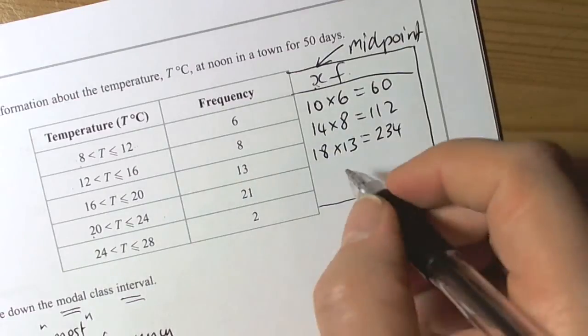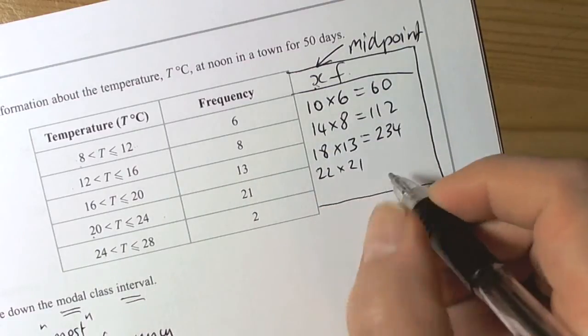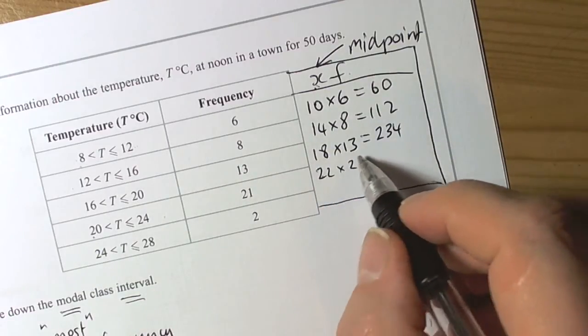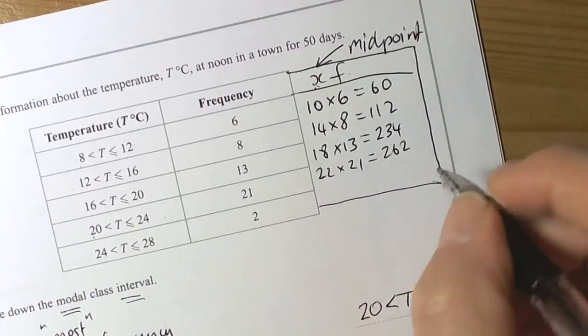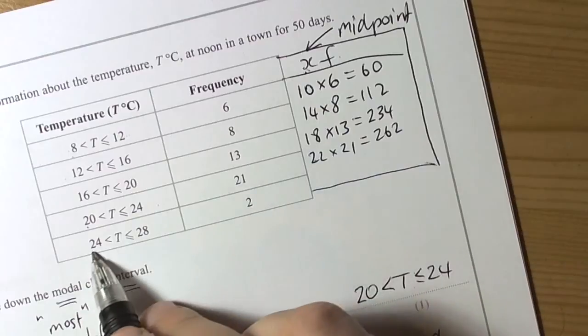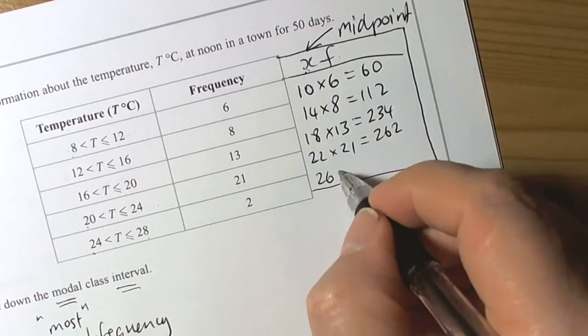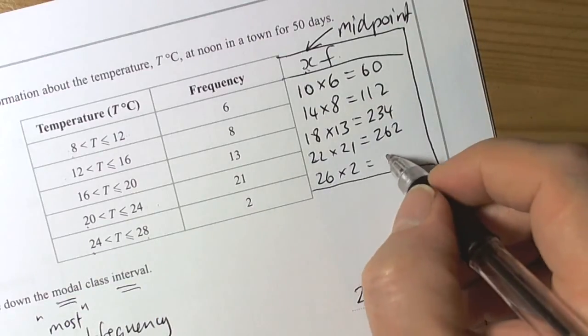Middle of that group, 22 times by 21, so 22 times 20 is 440 plus another 22 is 462. And then we've got to do the middle of this group which is 26, so 26 times 2 is equal to 52.